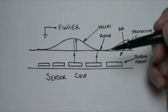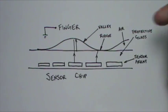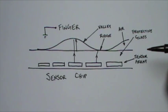All that the sensor chip needs to know is whether there's a ridge or a valley, and how fast the finger is moving to draw an accurate map.